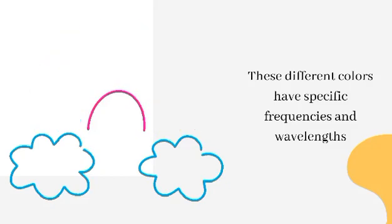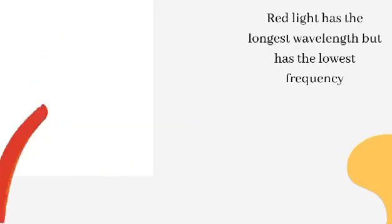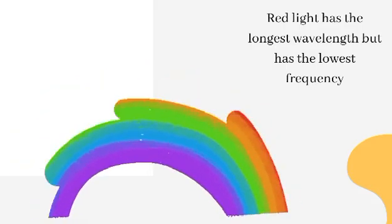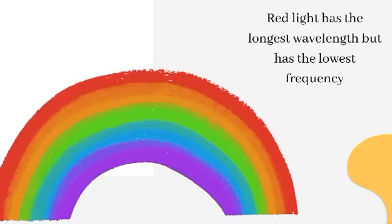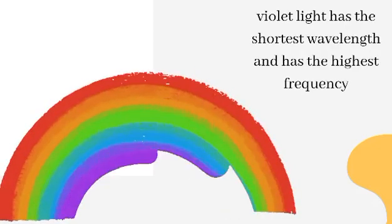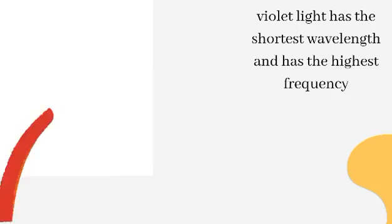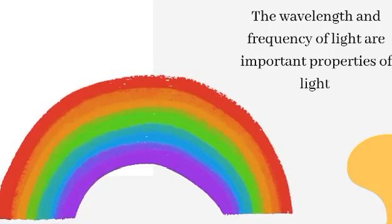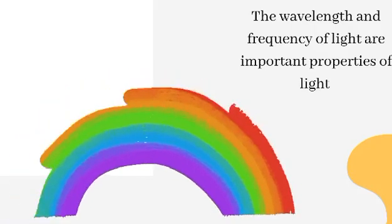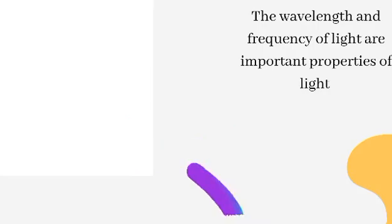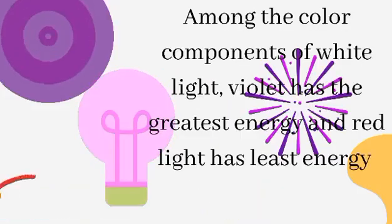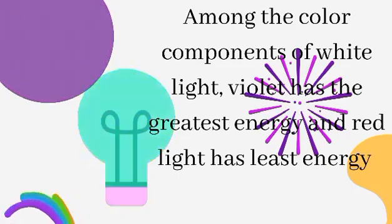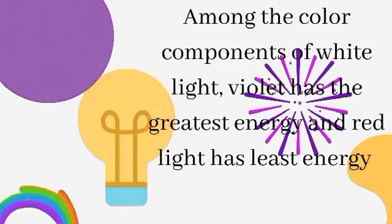These different colors have specific frequencies and wavelengths. Red light has the longest wavelength but has the lowest frequency. On the other hand, violet has the shortest wavelength but has the highest frequency. The wavelength and frequency of light are important properties — they determine the energy of a photon of light. There is a direct proportion between the frequency of light and its energy. Among the color components of white light, violet has the greatest energy and red light has the least energy.